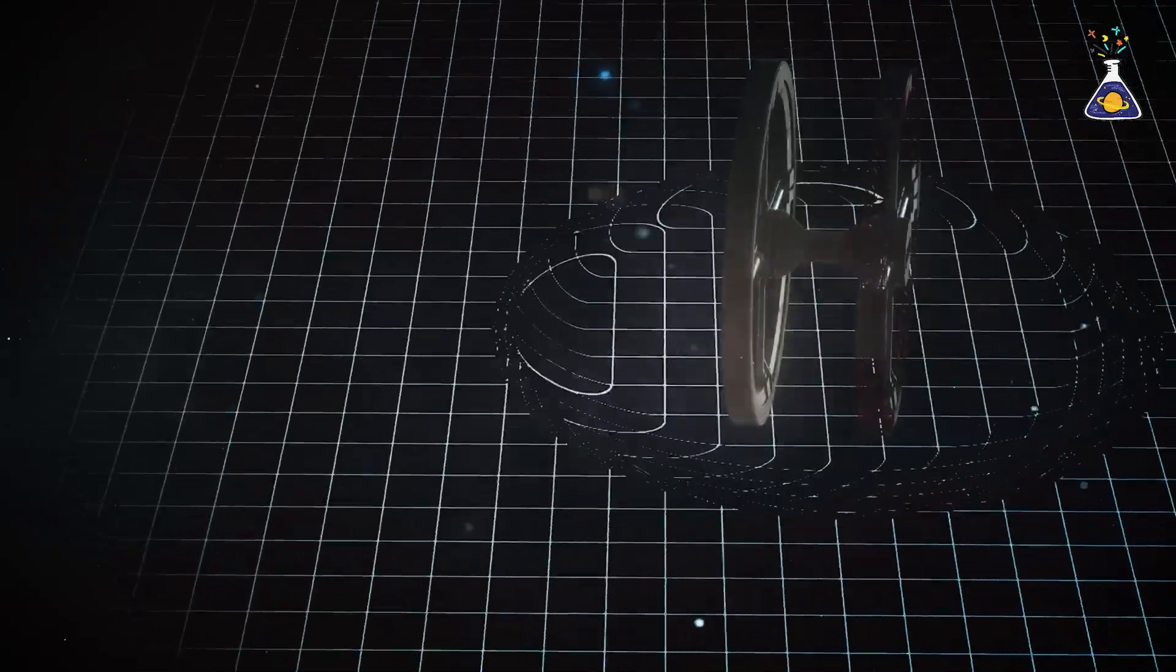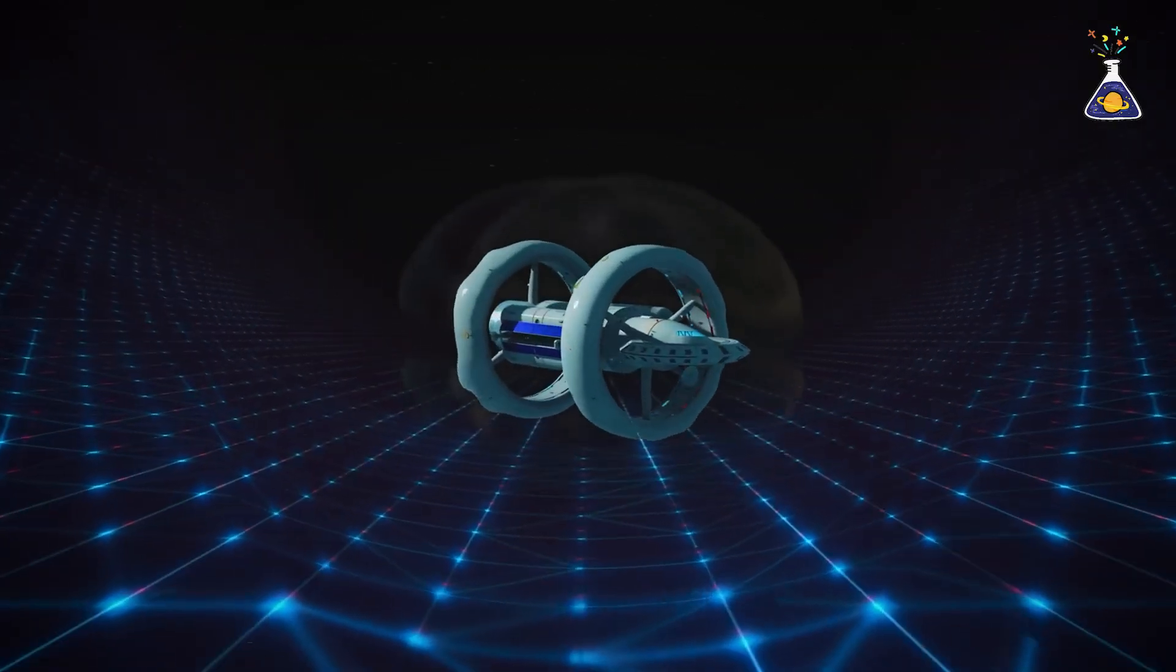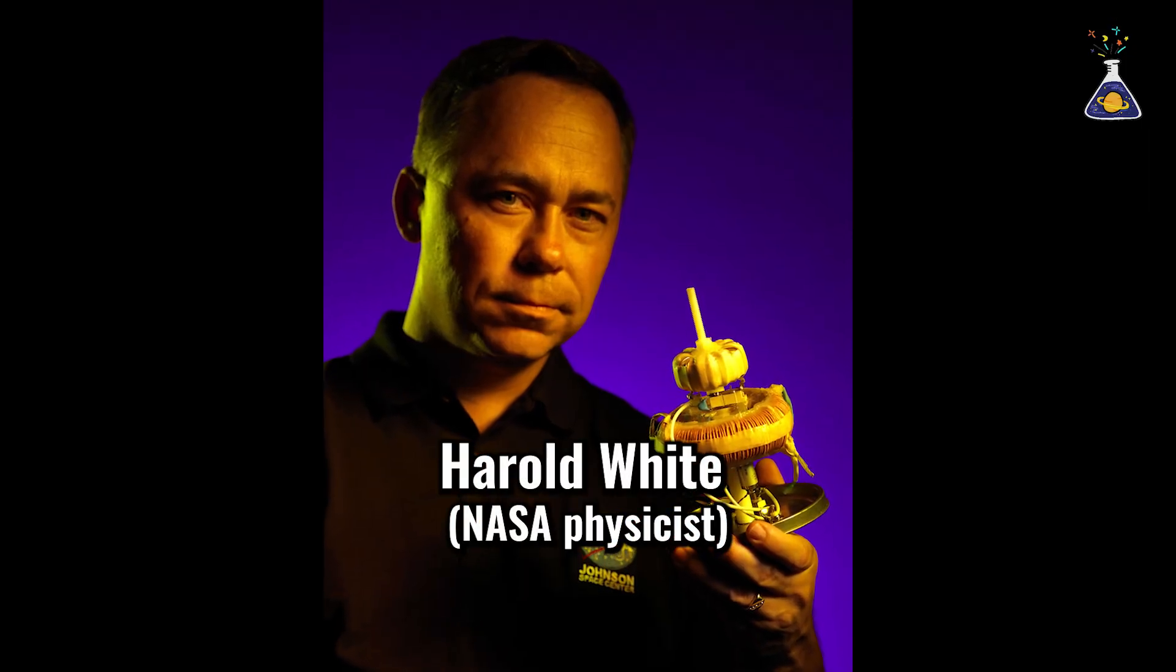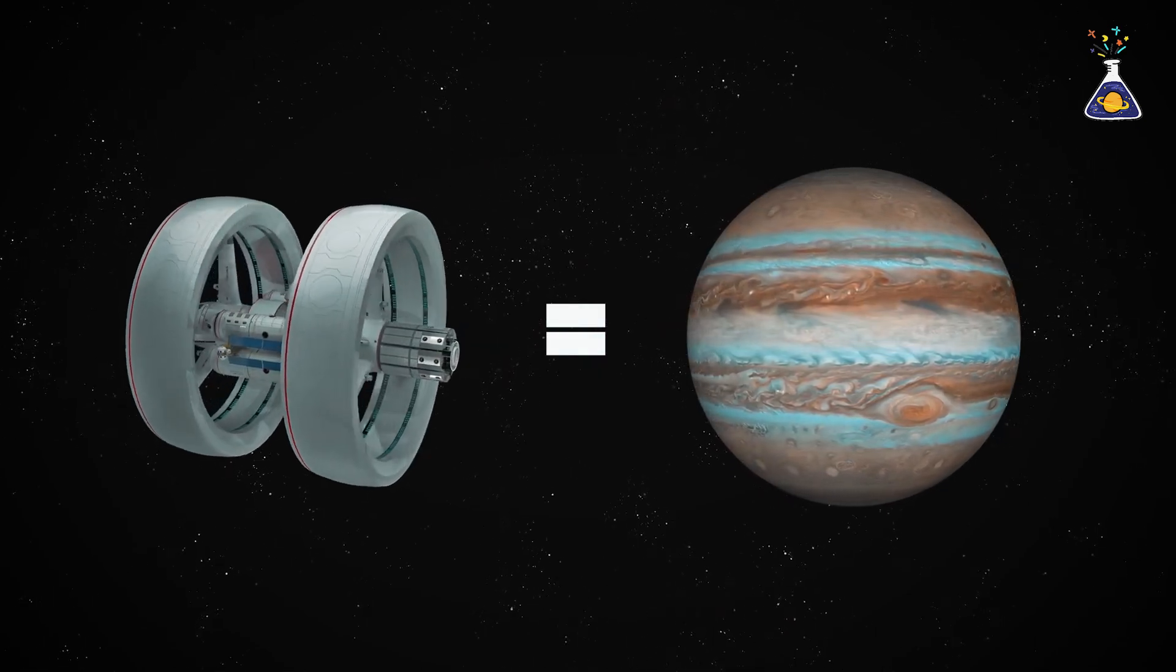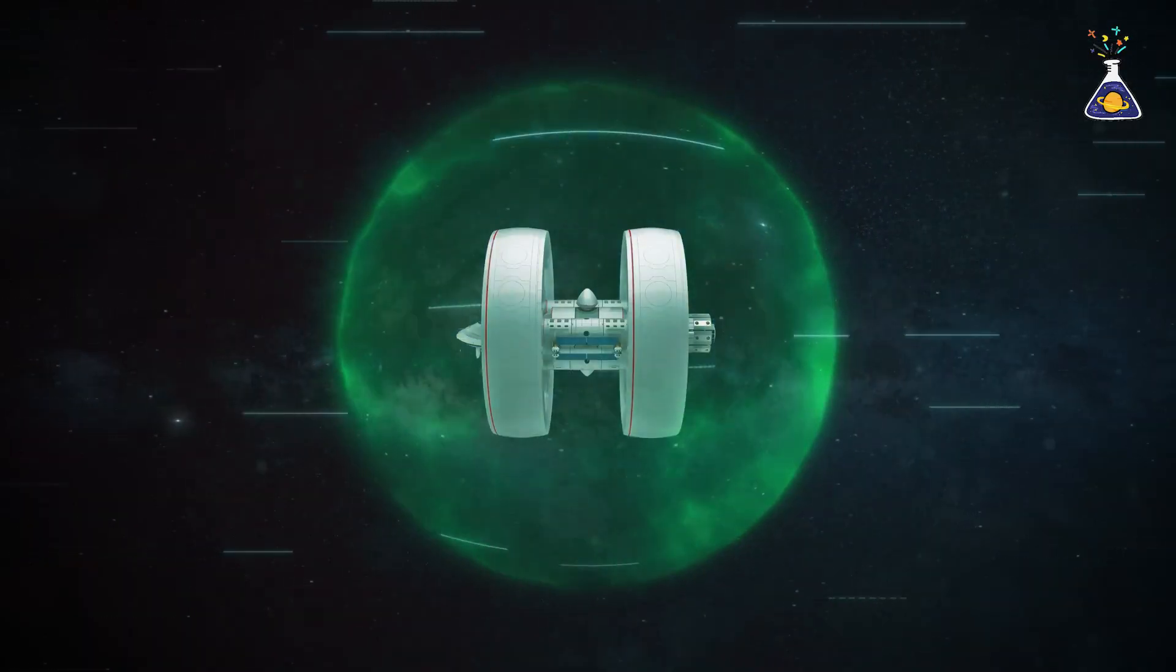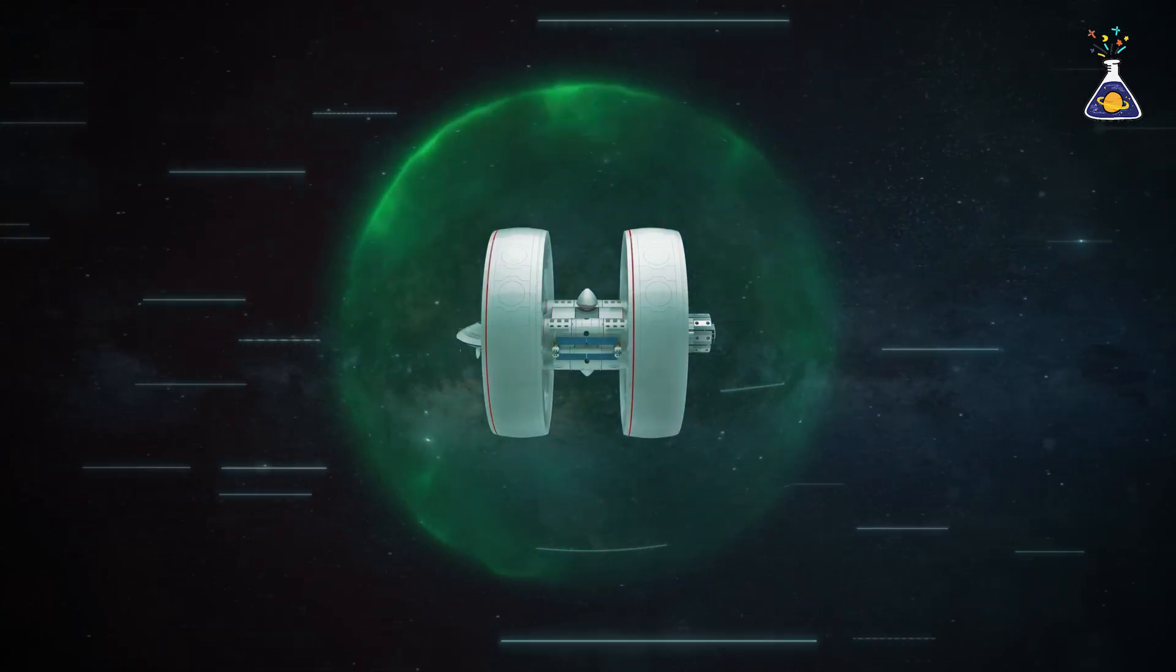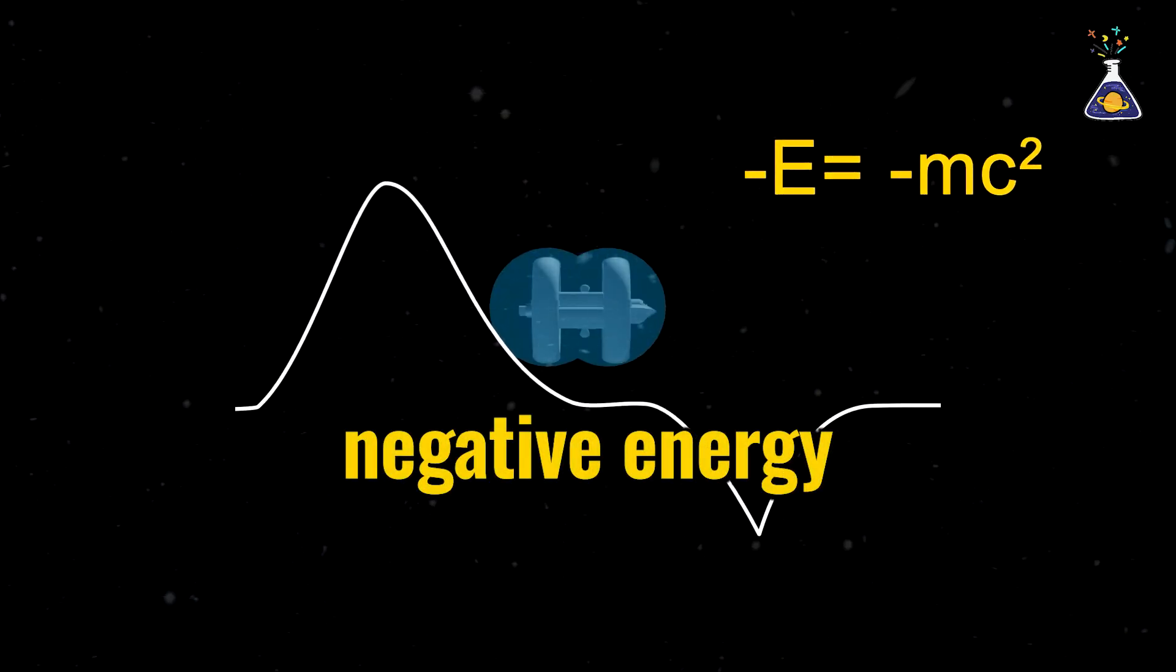But in the process, he ran into a serious problem. Operating the Alcubierre Drive would require an enormous amount of energy. In 2012, physicist Harold White estimated that, theoretically, the energy required would be equivalent to the mass of Jupiter. But that's not the end. There's an even bigger problem. The required energy isn't the ordinary kind we're familiar with. It involves matter with negative mass. In other words, negative energy.